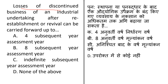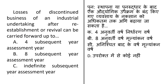The next question: 'Losses of discontinued business of an industrial undertaking after re-establishment or renewal can be carried forward up to how many years?' Options: 4 subsequent assessment years; 8 subsequent assessment years; indefinite subsequent assessment years; none of the above. Business losses can be carried forward and set off in subsequent years even if the business has been discontinued. The loss from specified business allowed under Section 35AD can be set off only against gain from specified businesses. The correct answer is option B — 8 subsequent assessment years.